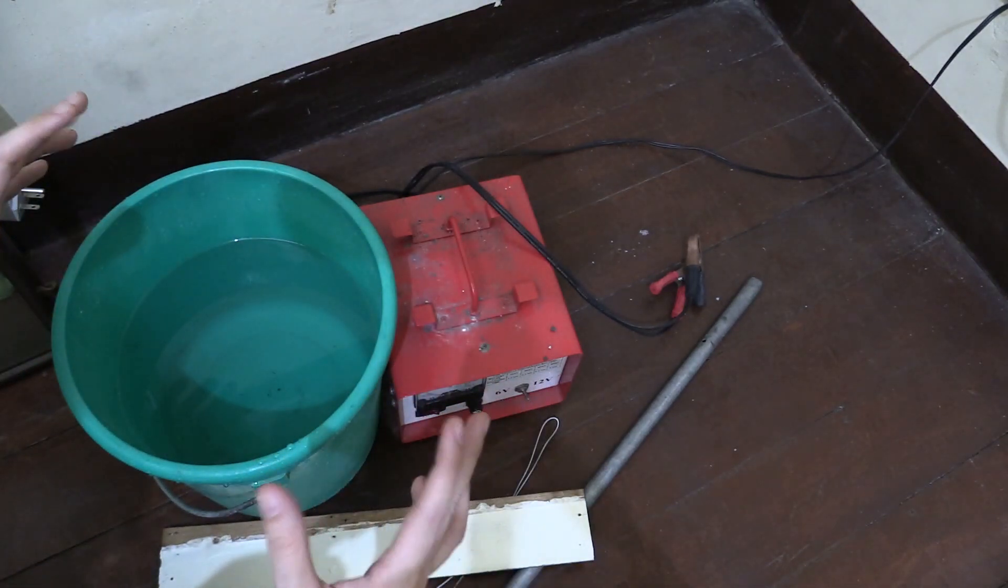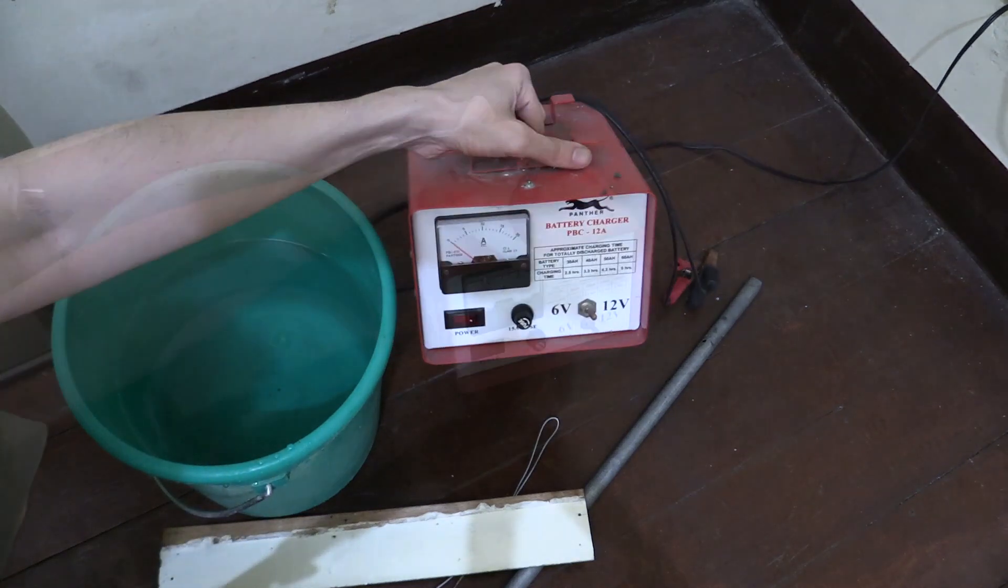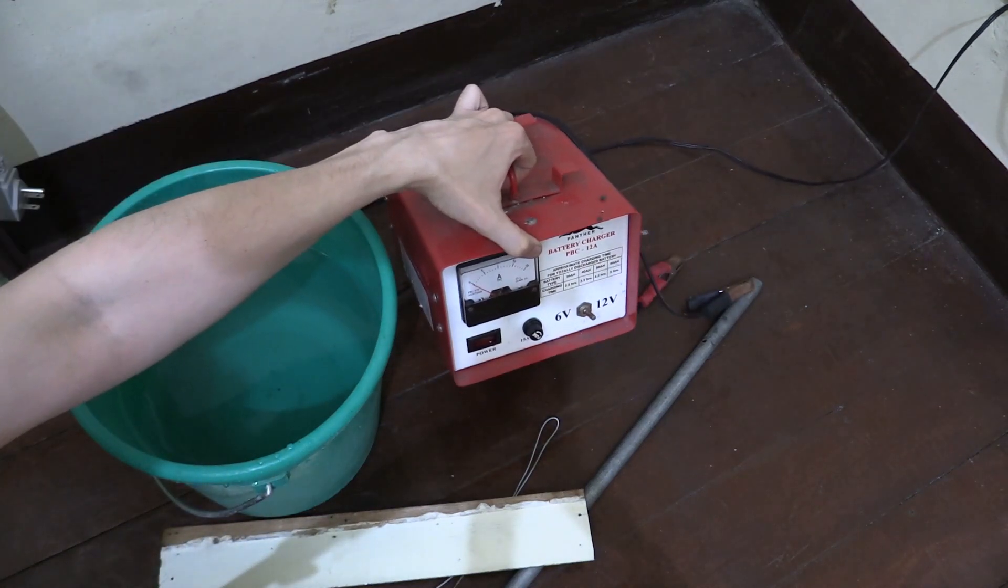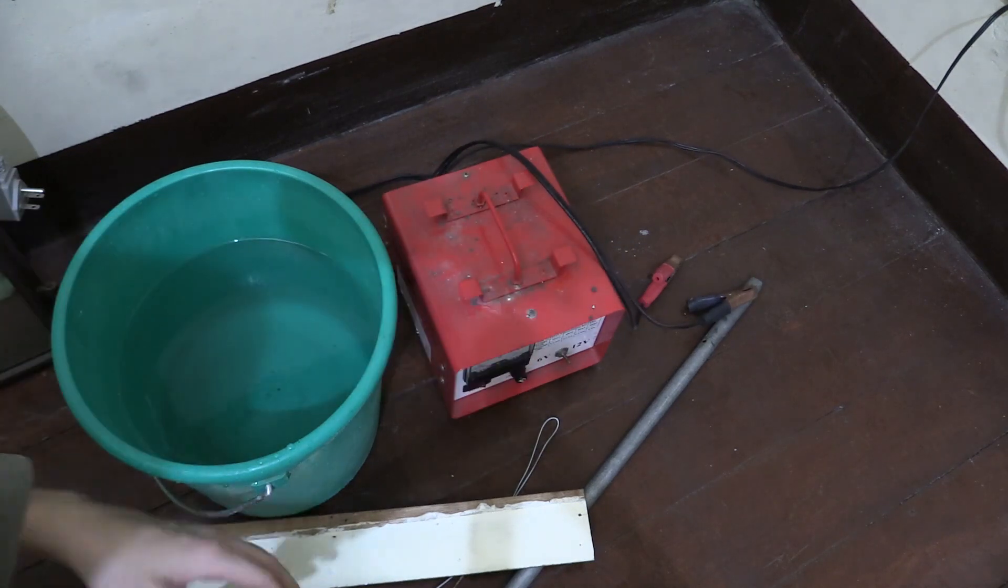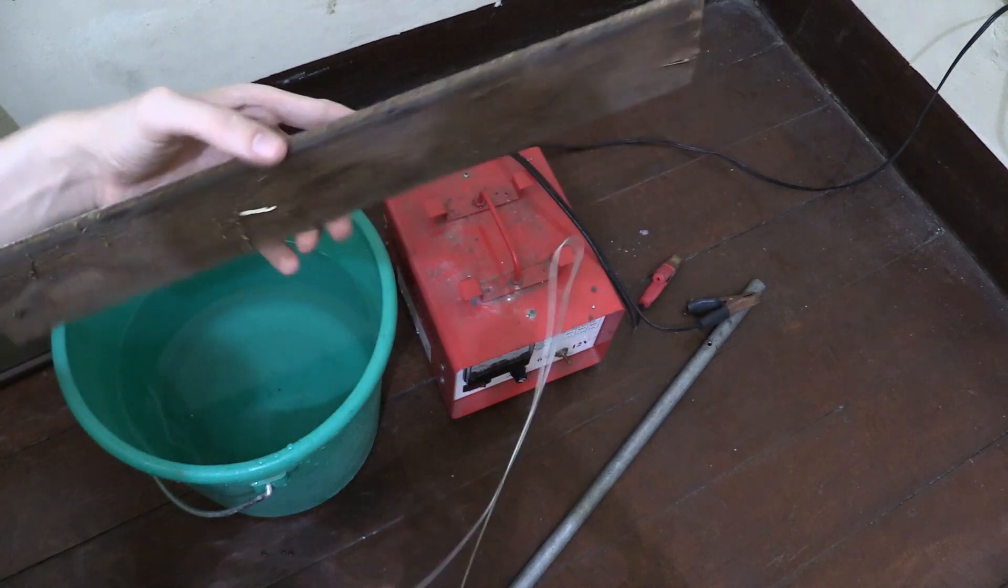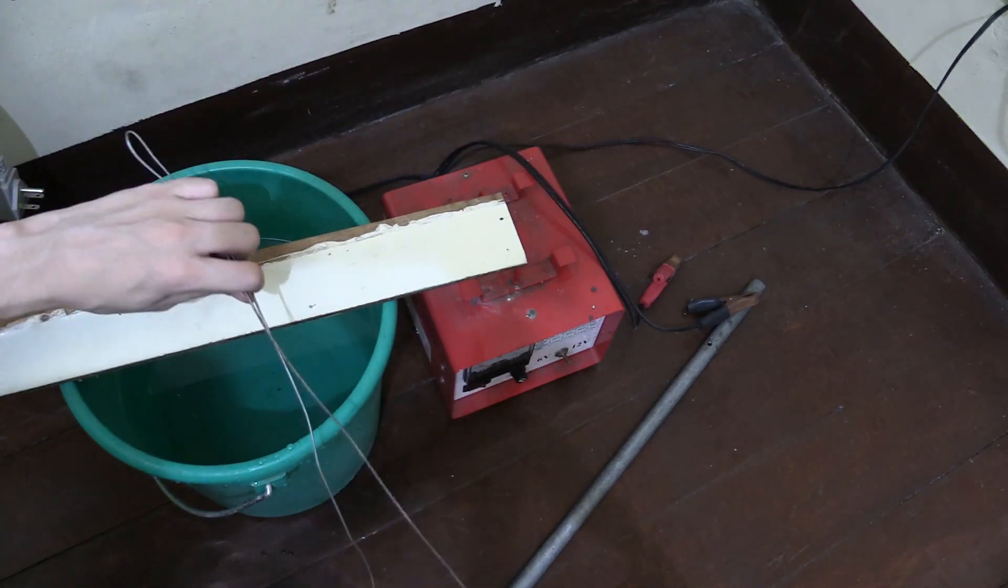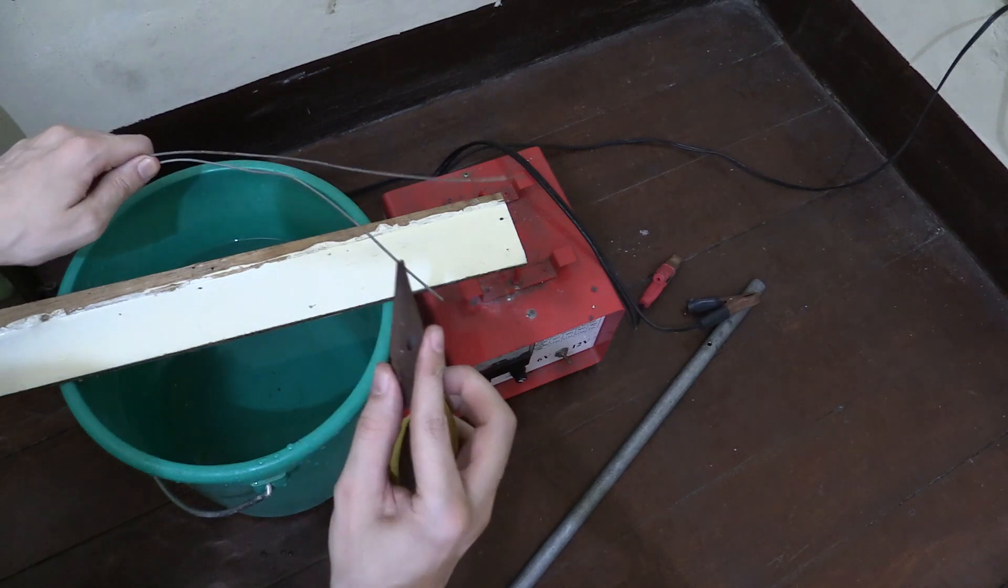We don't need a lot to do this. We need a bucket of water, a 12-volt battery charger - just an old one, not a smart charger. We need something to hold our piece in the water, so I'm going to use this piece of wood and some wire. I can hold that on top there, tie the wire around, and that will hold our piece in the water.